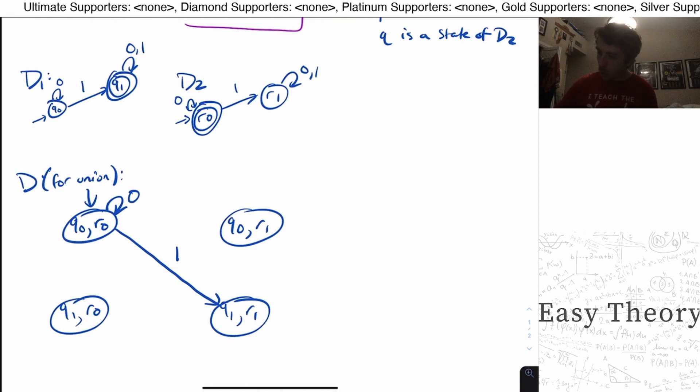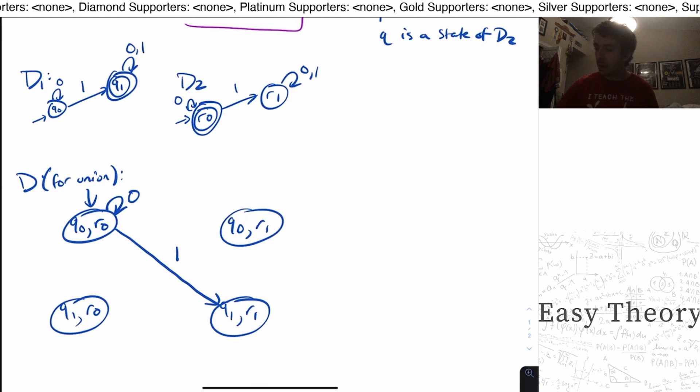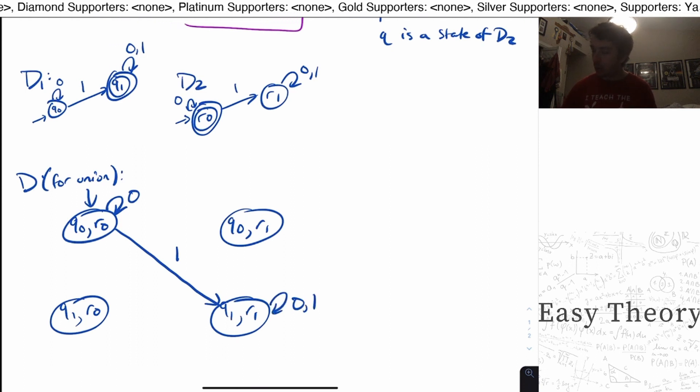And for Q1R1, well, they loop on everything, they loop on zero and one. So this state is going to have a self loop on zero and one.